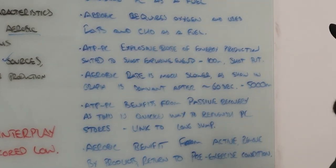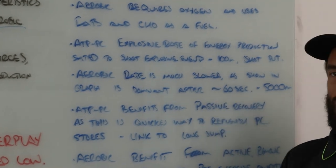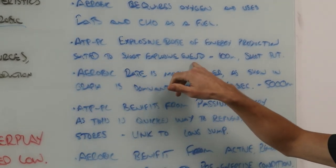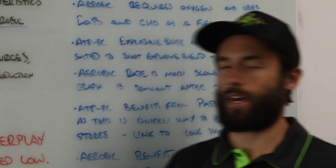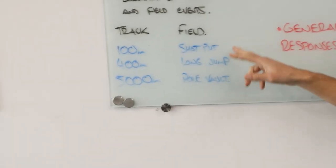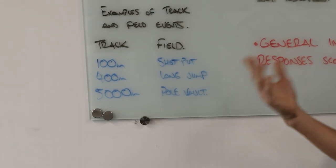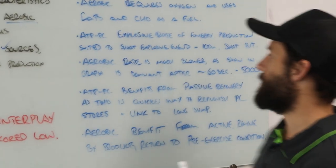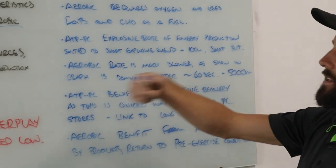Now we'll do it. The ATP-PC has an explosive rate of energy production, suited to short explosive events such as, now we can come over here, 100 metre sprint, shot put, long jump, pole vault - any one of those four, just pick one. That's an explosive event for the ATP-PC. We've done the rate of energy production, we've now linked it to the table.